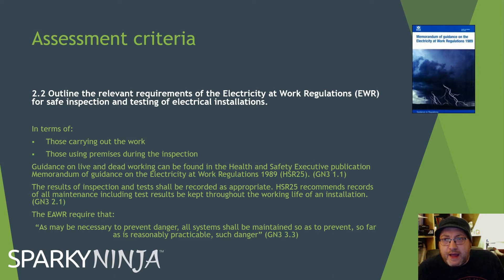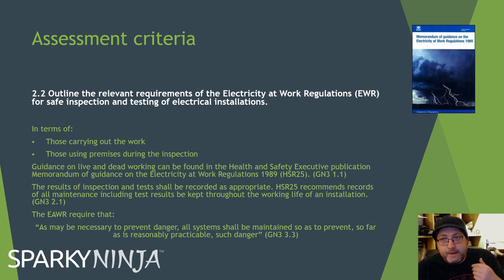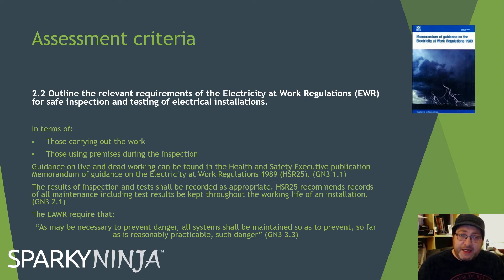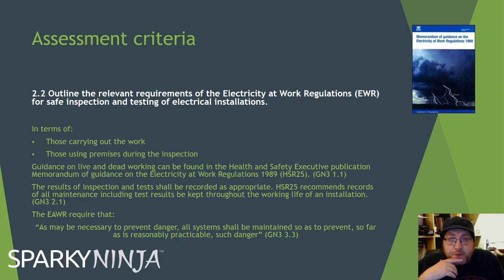Criterion 2.2: outline the relevant requirements of the Electricity at Work Regulations for safe inspection and testing of the electrical installation — in terms of those doing the work and those using premises during the inspection. It's a requirement for those doing the work to be competent, to be able to avoid or prevent danger. You must work competently. Any accompaniment must also be competent. Barriers, enclosures, suitable precautions are all expectations of a competent person.